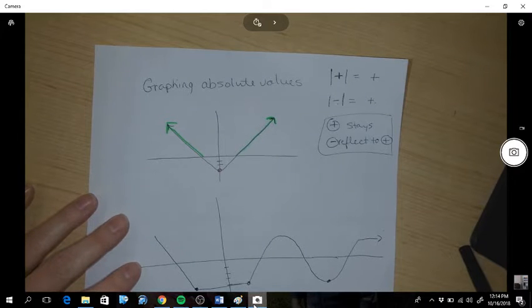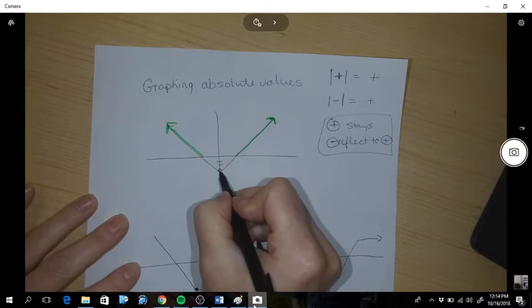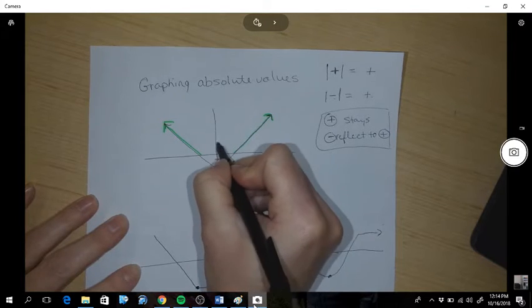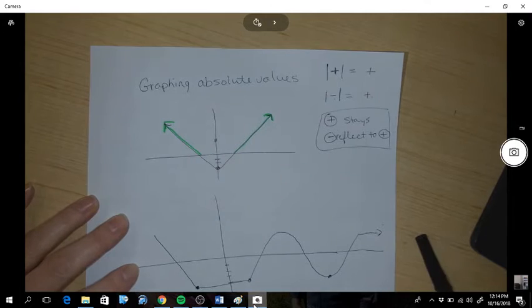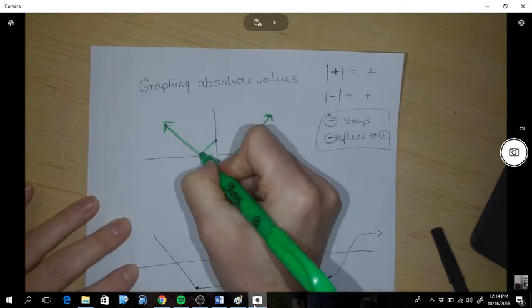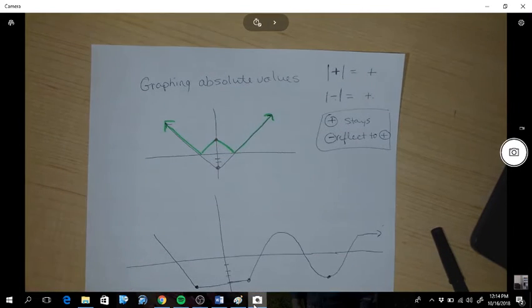Then, can you see that this point was at a negative 3, so it would reflect to a positive 3. And so the reflection would look like that. So this green is my new graph.